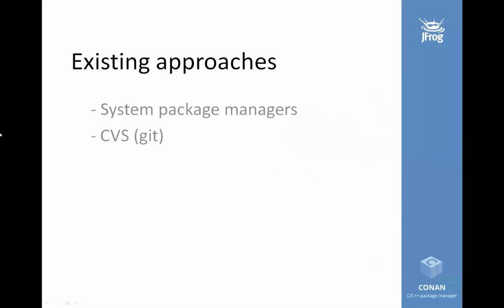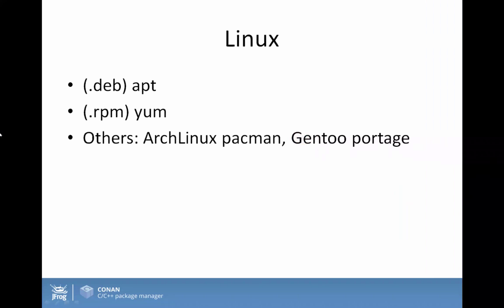What are some existing approaches to dependency management for C and C++? One approach is to use system package managers. The most popular ones are those of Linux distributions — Debian packages for Debian and Ubuntu, RPM packages for the Red Hat family, and others for other distributions. They are robust, fast, and very convenient, helping you install thousands of applications and open-source libraries you can use as developers. These are very good systems.